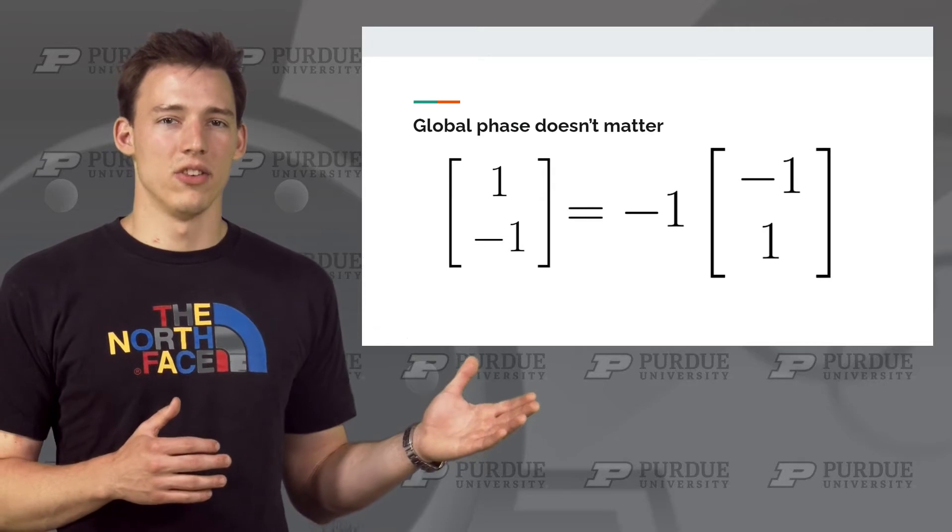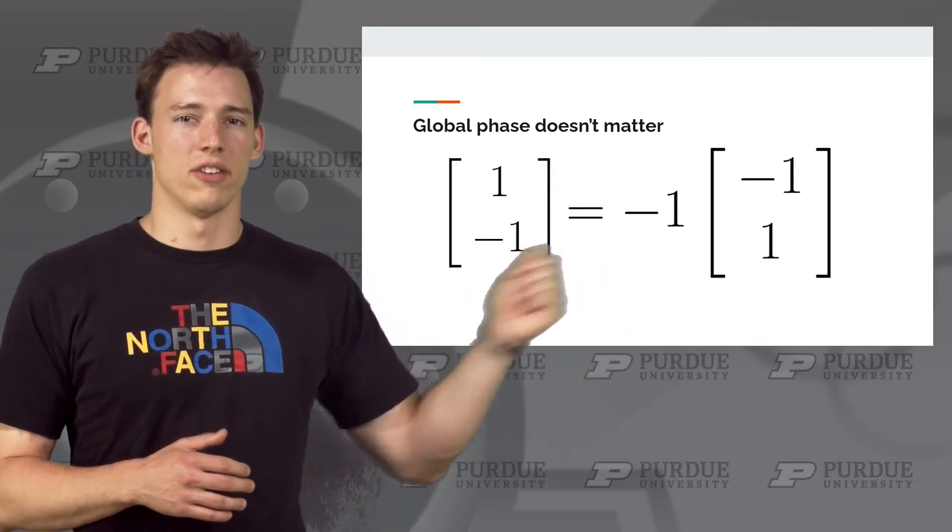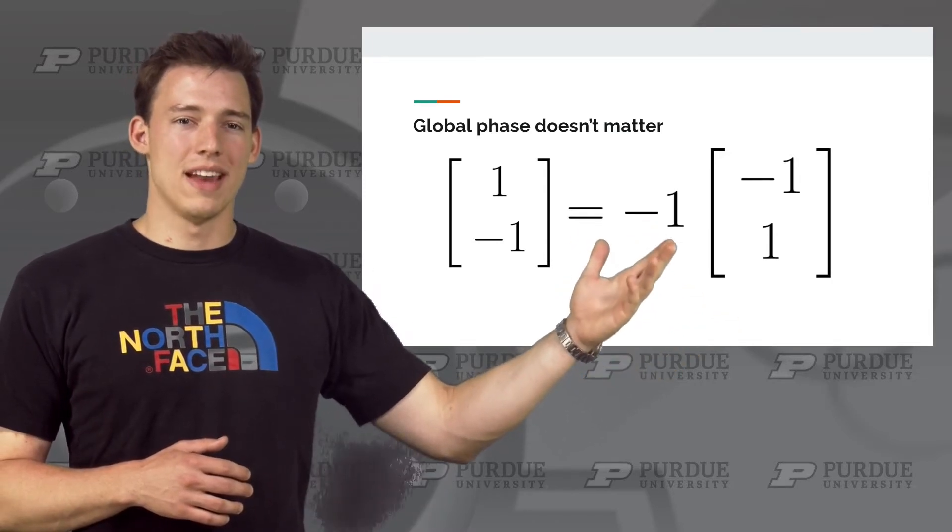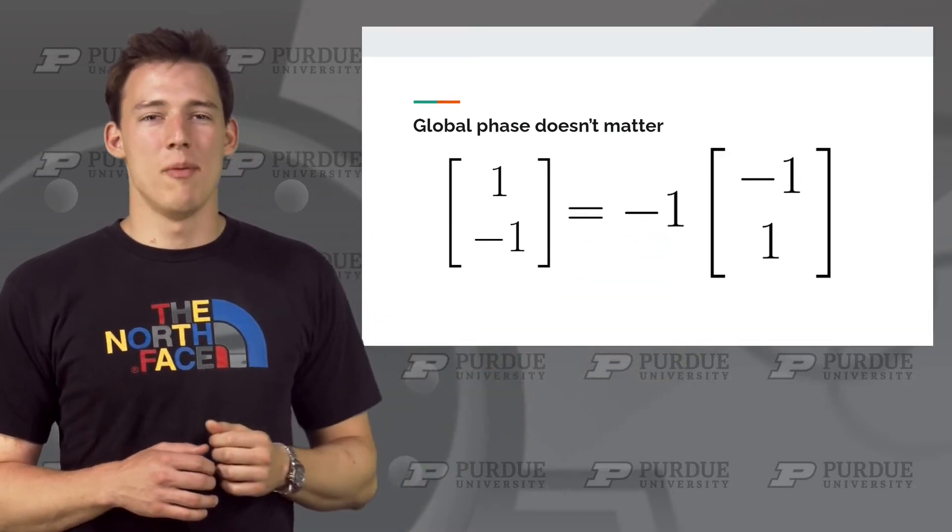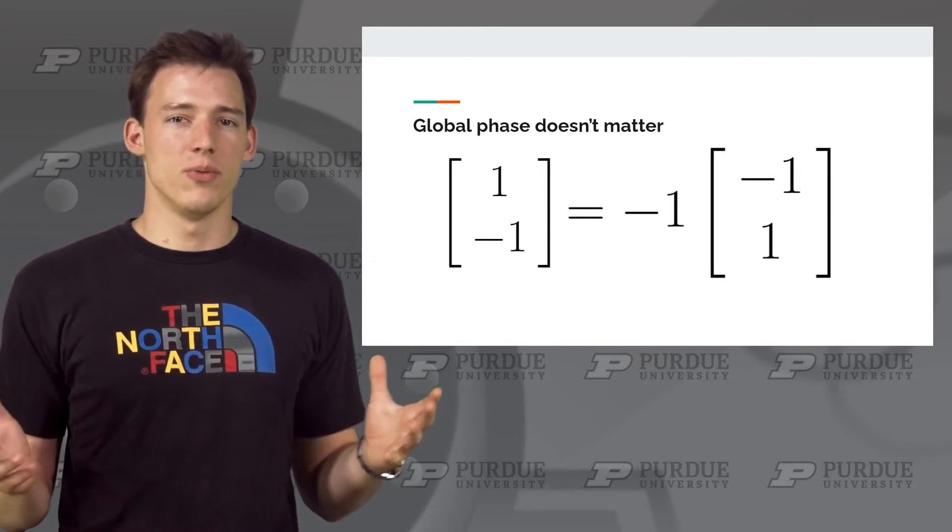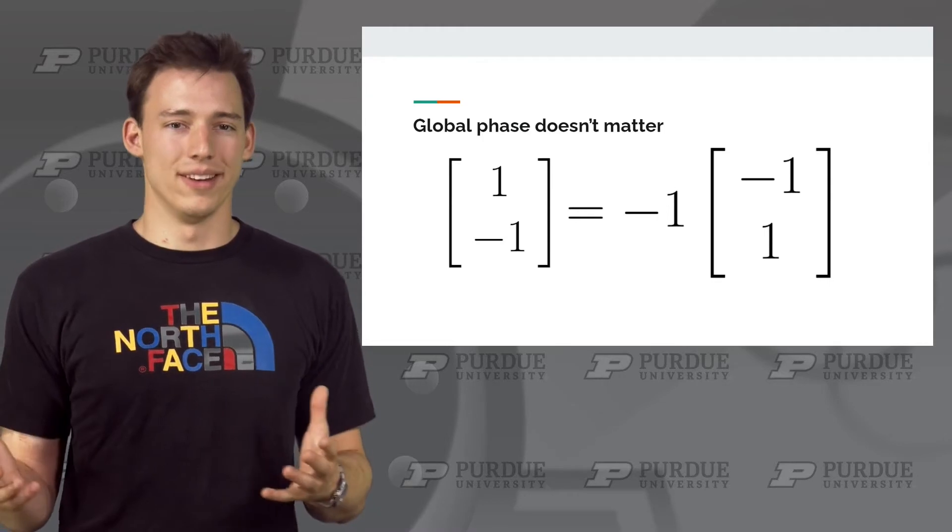Look at these two vectors. The only difference between these two vectors is a global phase factor. That is to say that the only difference is that we have multiplied the original state with a negative 1. I'm omitting a normalizing factor here, but for clarity, if this was a real state vector, you would need to normalize both of them such that their length was 1.